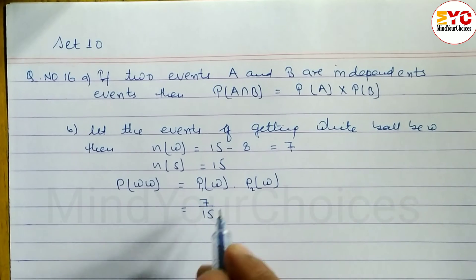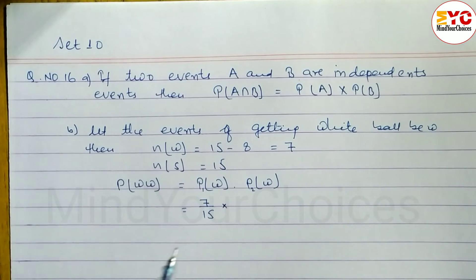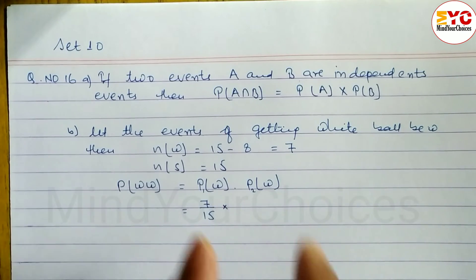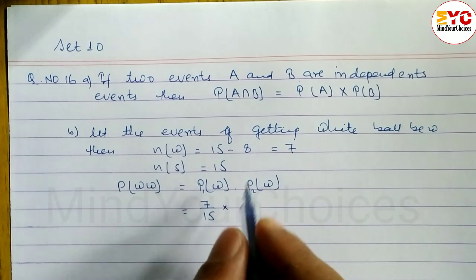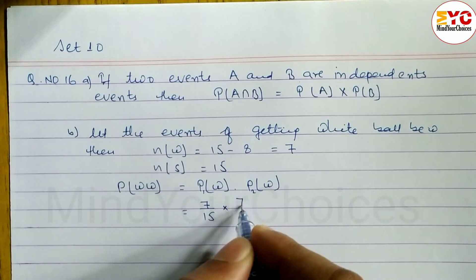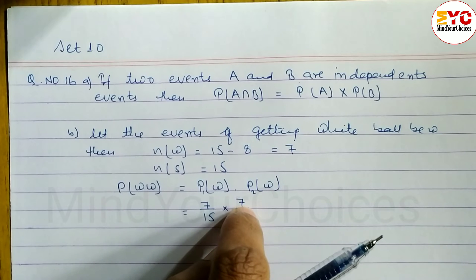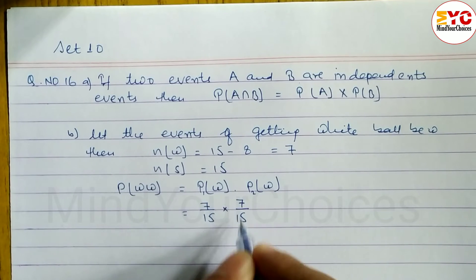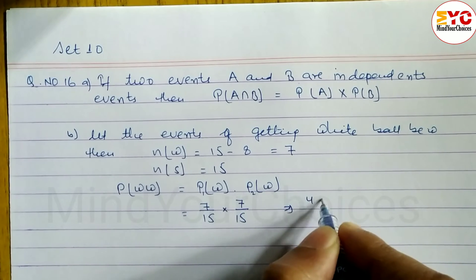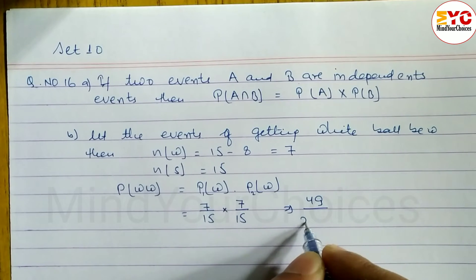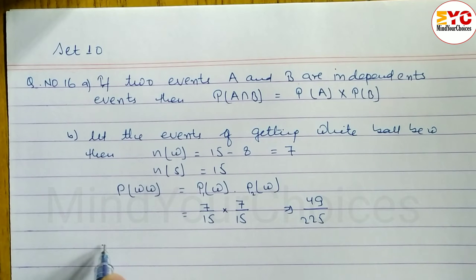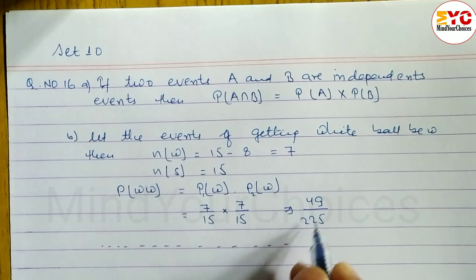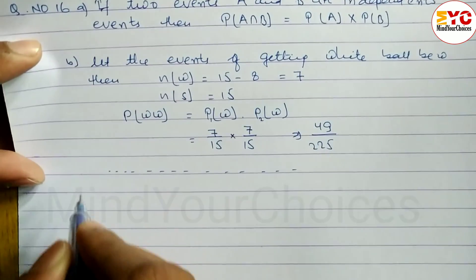Number of white balls is 7 and total number of balls is 15. Since the question is with replacement, after the ball is withdrawn the ball is still in the bag. So the number of white balls remains 7. With replacement, the number is the same. So 7 by 15 again. Calculate: 7 times 7 is 49, by 15 times 15 is 225. Probability of getting both white balls is 49 by 225.